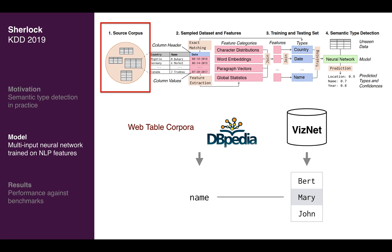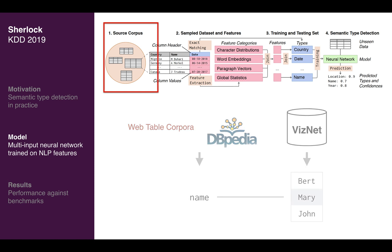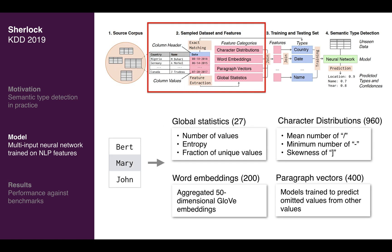In total, we have around 700,000 columns across each of the 78 semantic types. Each column is described by four categories of features, by extracting global column statistics such as the entropy of each column, character distribution statistics like the average number of A's in single cells, word embeddings, and paragraph vectors.